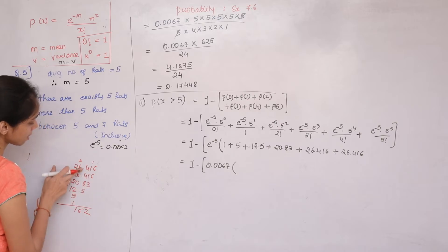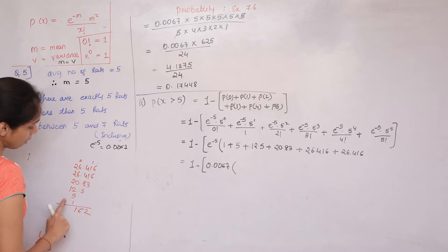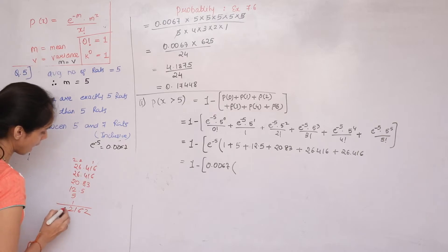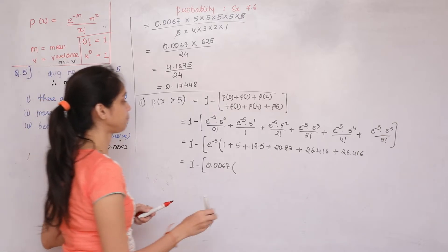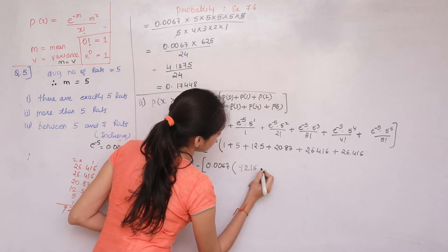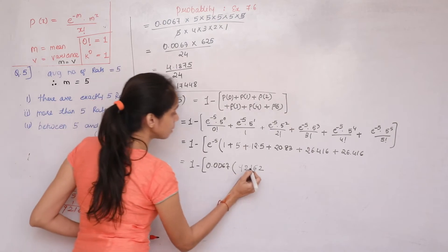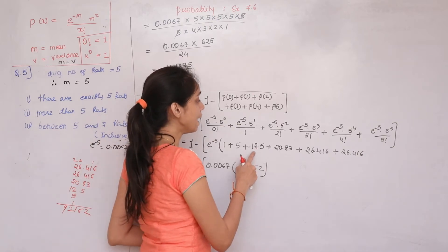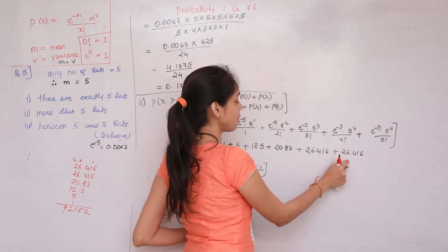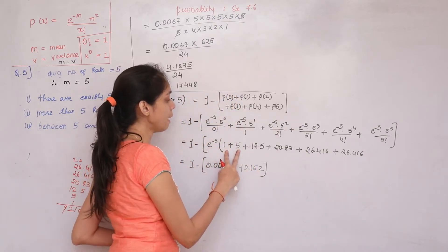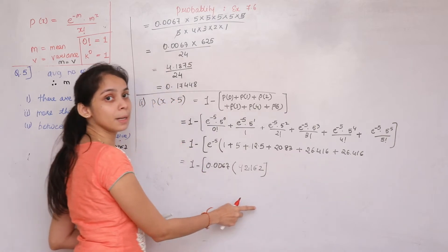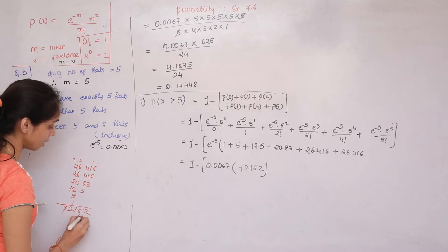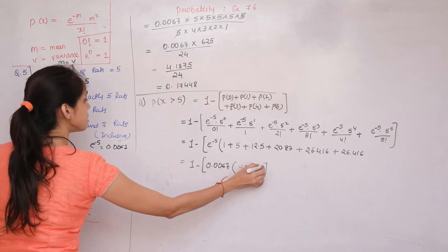Rounding the intermediate value to 0.6175 (rounding the last digit up), 1 − 0.6175 = 0.3825. So the final answer for the second condition: P(X > 5) = 0.3825.